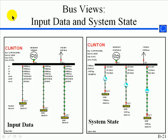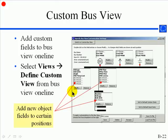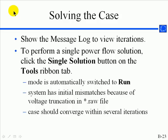This slide summarizes the input data view, the system state view, and the custom view with the different fields that show up with each. You can choose which objects to show on your custom view. At this point, let's solve the PowerFlow case to get the system state and all the flows.